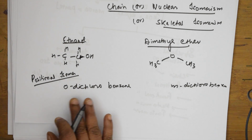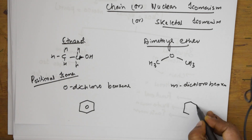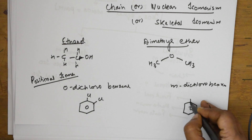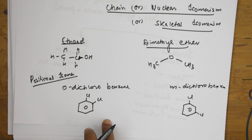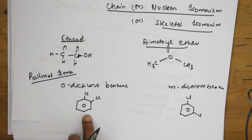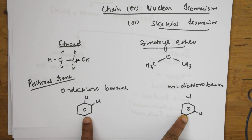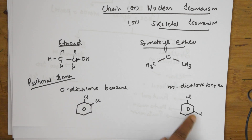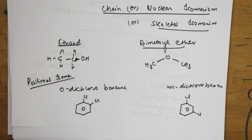Now let's look at positional isomerism. Here I have a benzene ring with orthodichlorobenzene — one chlorine at position one and one at position two. And metadichlorobenzene has one at position one and one at position three. Both have the same molecular formula C6H4Cl2, but they differ in the position of the functional groups, which is why their properties also differ.